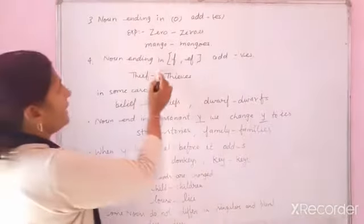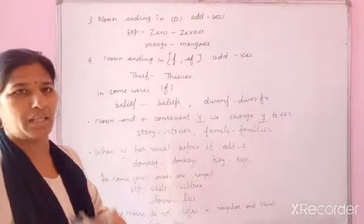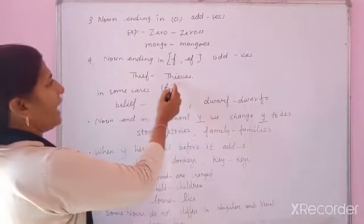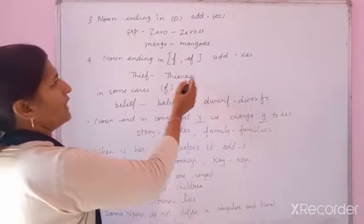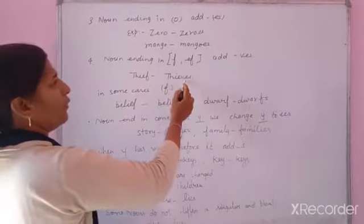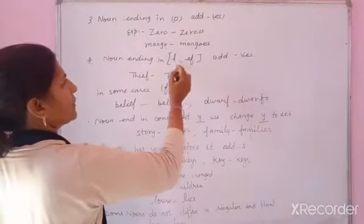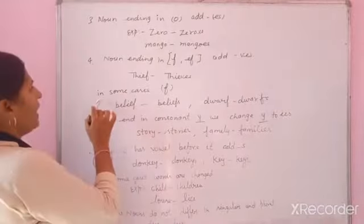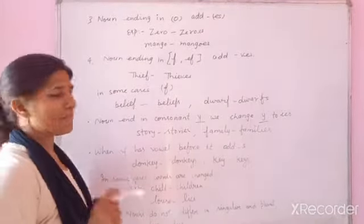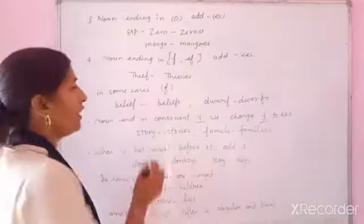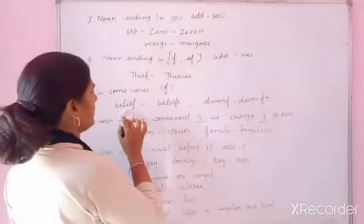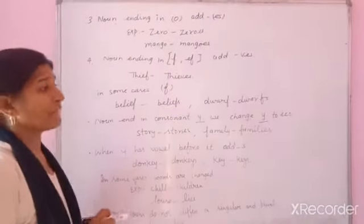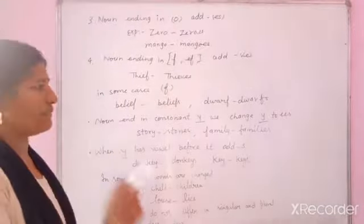Next is noun ending in F or EF. Yadi last mein kisi word ke F ho, jaise 'thief', to F ko remove karke V-E-S use karenge — 'thieves'. In some cases, F last mein hota hai aur hum only S use karte hain, jaise 'belief' becomes 'beliefs'. 'Dwarf' becomes 'dwarves' — V-E-S use karte hain, yeh kuch cases mein hai.